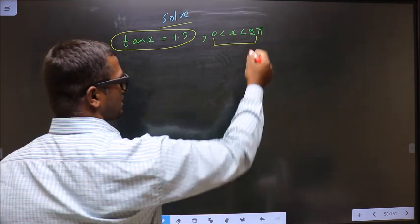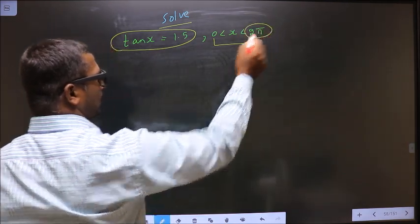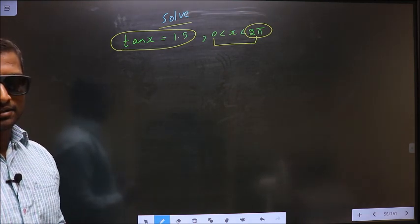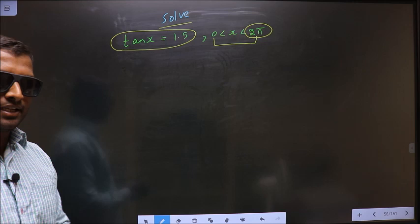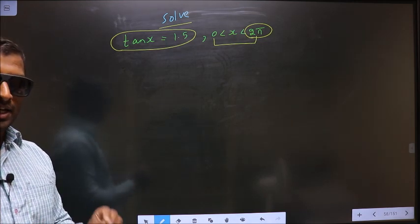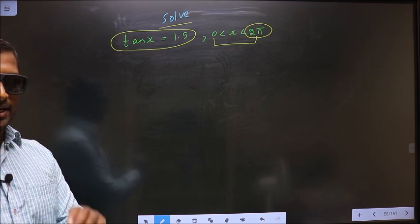Here the catch is you have 2π here. That means you should get the answer in radians. To get the answer in radians, you should put your calculator in radians mode. I repeat, put calculator in radians mode.